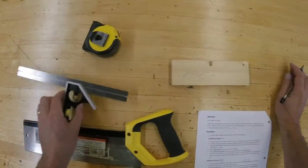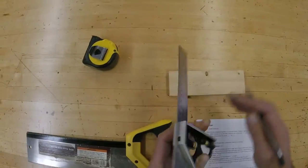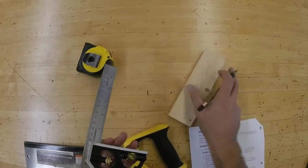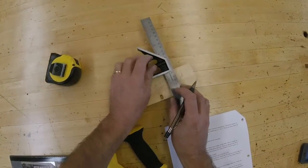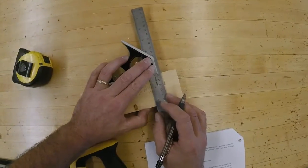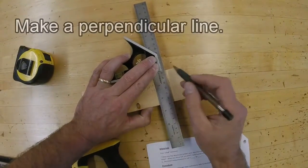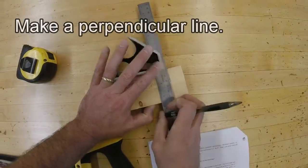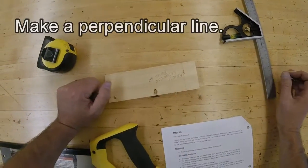Next I'm going to use a combination square to make a perpendicular mark. I'm right-handed, so I'll turn this this way so I can get a better angle. And I'm going to slide that right there and make my mark at 6 and 3/4 of an inch.